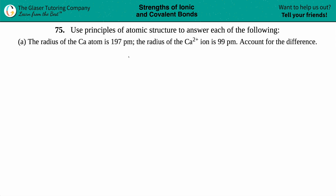Number 75: use principles of atomic structure to answer each of the following. Letter a says the radius of the calcium atom is 197 picometers, but the radius of a Ca2+ ion is 99 picometers. Account for the difference. I think the best way to explain this is by drawing.